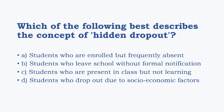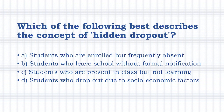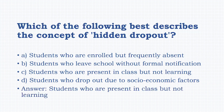Which of the following best describes the concept of 'hidden dropout'? Options: students who are enrolled but frequently absent, students who leave school without formal notification, students who are present in class but not learning, students who drop out due to socioeconomic factors. The answer is: students who are present in class but not learning.